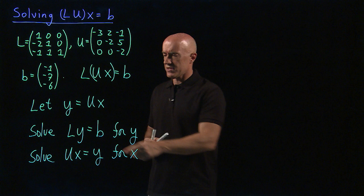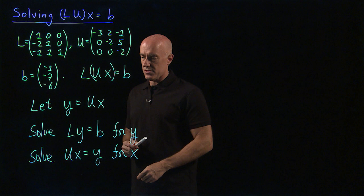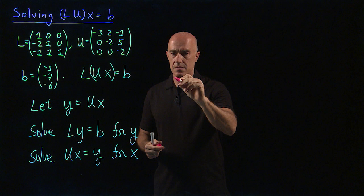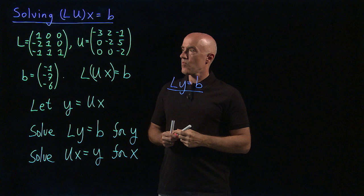Why is this fast? This is fast because L is lower triangular and U is upper triangular. So let me show you, then, how that will work. So first, we want to solve L, Y equals to B.